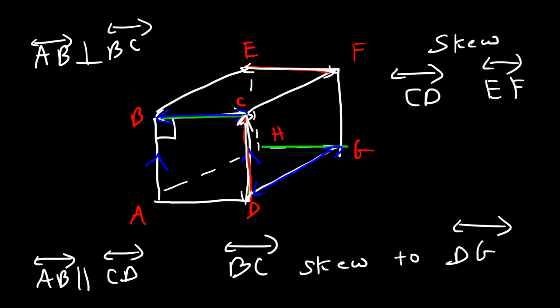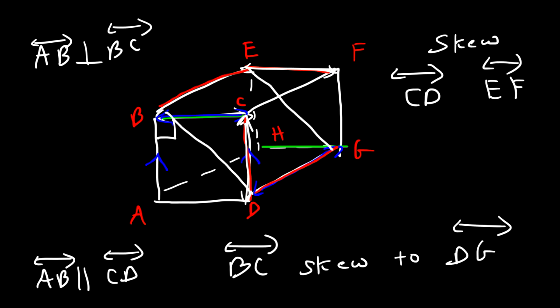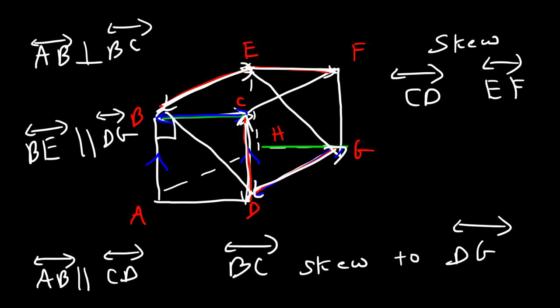Perpendicular lines do intersect, so AB and BC intersect at point B and meet at right angles. Now what's the relationship between BE and DG? Notice that those two lines are parallel because we can draw a plane that contains both of them — basically the diagonal plane of this rectangle. So BE is parallel to DG.